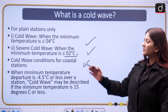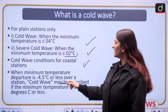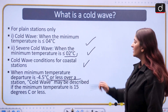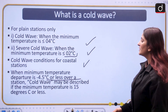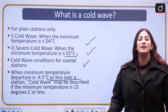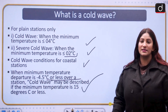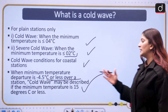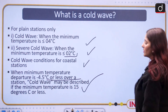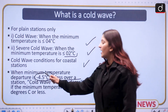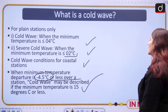For coastal stations, when the minimum temperature departure is minus 4.5 degrees Celsius or less, cold wave may be described if the minimum temperature is 15 degrees Celsius or even less. Remember, this is the departure and not the actual degrees.